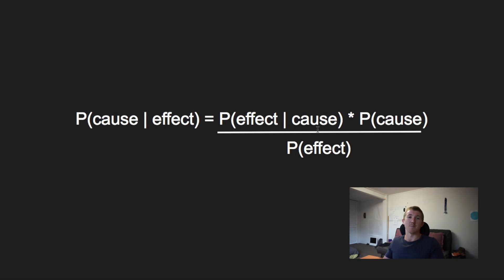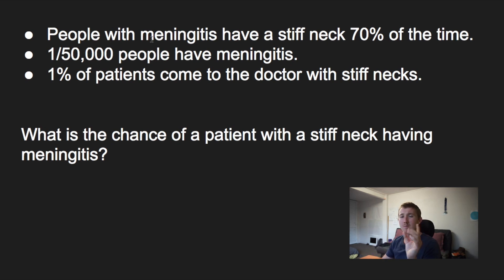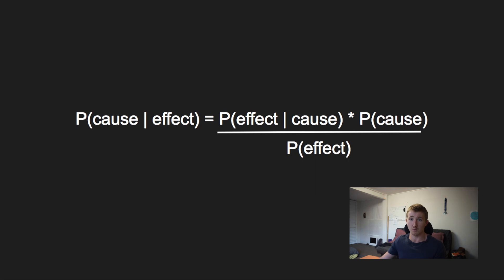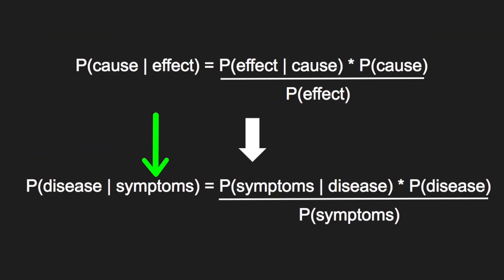Let's do a real-life example. Pretend you're a medical doctor and you want to work out the chances of someone having a certain disease based on their symptoms. The disease would be the cause and the symptoms would be the effects. People with meningitis have a stiff neck 70% of the time. One in 50,000 people have meningitis, and 1% of patients come to the doctor with stiff necks. So what is the chance of a patient with a stiff neck having meningitis? Using Bayes' rule, we can work out the probability of the disease given the symptoms - what's the probability of having meningitis given the fact that the patient has a stiff neck? By taking the probability of the patient's symptoms given their disease, times the probability of having the disease, over the probability of symptoms.